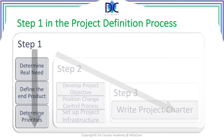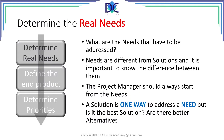Here you see again the process with the three steps like we defined it before. We are starting with the first step and you see the three processes at the left: determine the real need, define the end product, and determine the priorities. Let's first look into the real needs. What are the real needs? What are the needs to be addressed by this project?